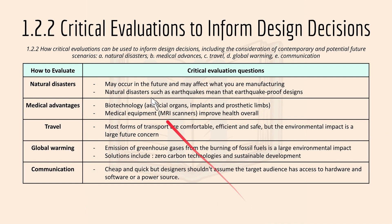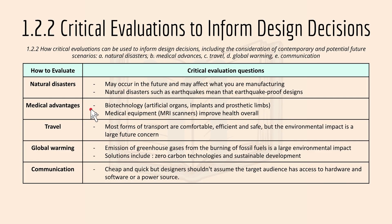We'll now move on to 1.2.2 critical evaluations. There are different things to evaluate, including natural disasters, medical advantage, travel, global warming, and communications. For natural disasters, they may occur in the future and affect what you are manufacturing. For example, earthquakes mean you need earthquake-proof designs for buildings in that location. For medical advantages, there's biotechnology like artificial organs, implants, prosthetic limbs, and medical equipment including MRI scanners to improve health overall.